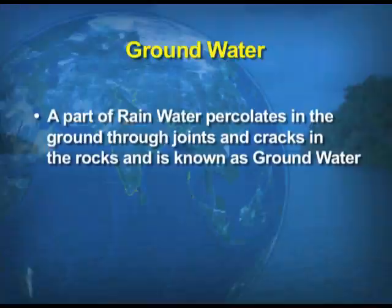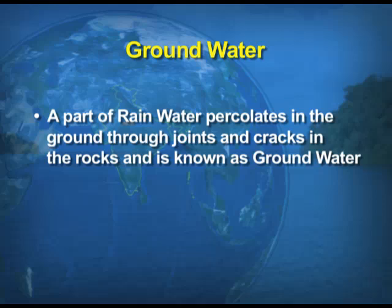After surface water, we take up groundwater. A part of rainwater percolates into the ground through joints and cracks in rocks — that water is known as groundwater. About 60% of the groundwater is confined to the upper layers of the soil; percolation must go deep into the soil to find moisture in the lower layers.